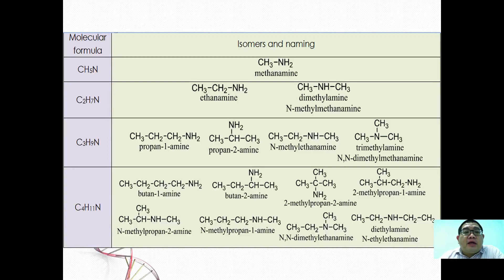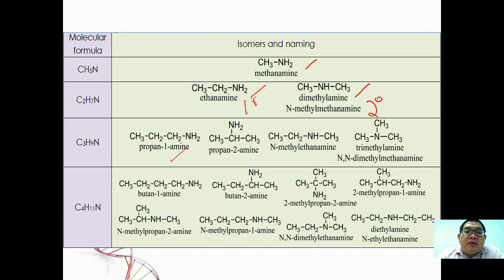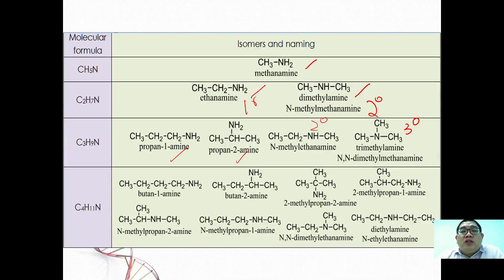Here are examples of isomers for the first four carbons in the homologous series of amines. CH₃NH₂ is methanamine. With 2 carbons we have ethanamine (primary), or if one alkyl moves to nitrogen, dimethylamine (secondary). With 3 carbons there are four isomers: propan-1-amine and propan-2-amine as primaries, N-methylethanamine as secondary, and trimethylamine as tertiary. Note that unlike alcohols, amine classification is based on the number of carbons surrounding the nitrogen.